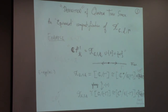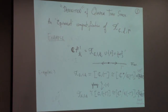Now, what is a quantum toric stack? It wants to be a compactification of a quantum torus. For example, what is quantum P¹? Quantum P¹ with deformation parameter ℏ is the quantum torus union zero union infinity. But zero and infinity are very stacky points — they have very large stabilizers — so I should write Bℤ or Bℤ here: they are point stacks, not points.